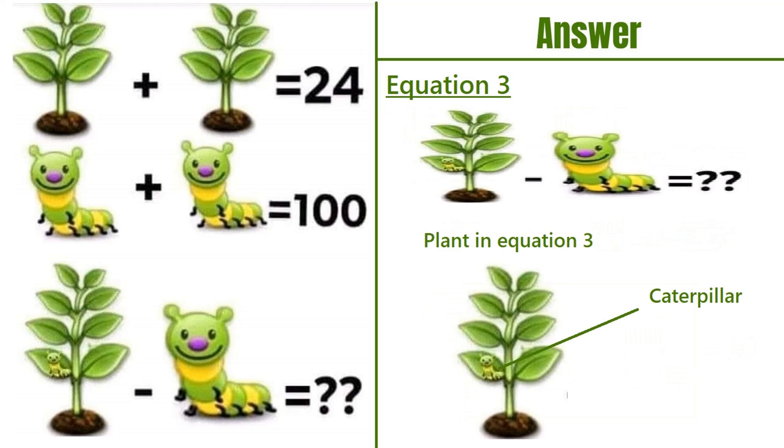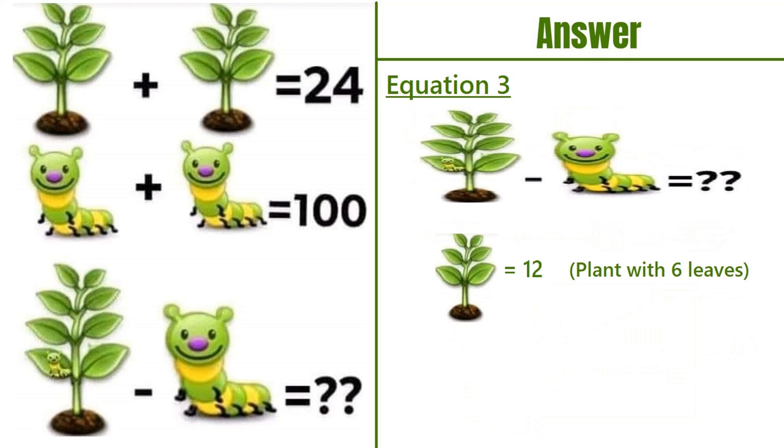if we look closely, there is a caterpillar and there are 8 leaves. So the plant in equation 1, which has 6 leaves, equals 12. The plant with 8 leaves and a caterpillar equals 16 plus 50, which equals 66.